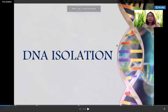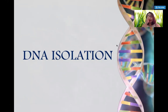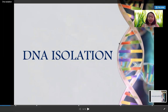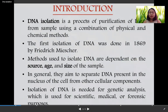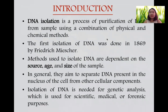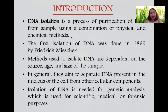We have talked about DNA isolation before. Although isolation of DNA between plants and animals are almost the same, we have to specify a topic for a particular type of cell - whether animal or plant. To define, DNA isolation is a process of DNA purification from a sample using a combination of physical and chemical methods. The first isolation of DNA was actually done in 1869 by Friedrich Miescher.